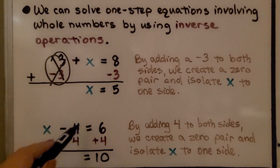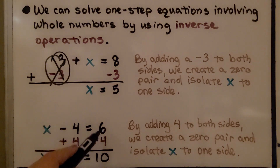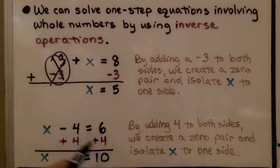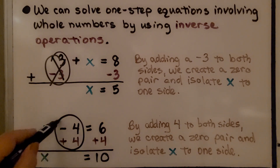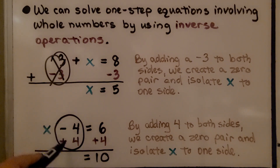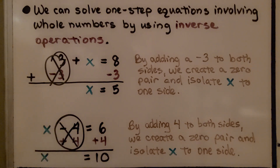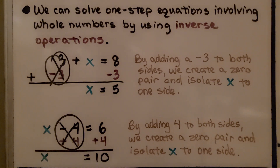Here we have x minus four is equal to six. By adding four to both sides of the equation, we can create a zero pair. We have a negative four plus a positive four — that makes zero. And we're left with x is equal to six plus four, which is ten. We isolated x to one side.